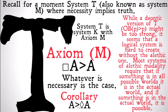While a deontic version of T, it's obligatory that P implies P, might be too strong, since just because something's obligatory doesn't mean that people are actually going to do it or follow that obligation. It seems that a logical system is really hard to create without this alethic axiom M or Axiom T. Most systems of alethic modality require that if something is in all possible worlds, it's in the actual world as well.